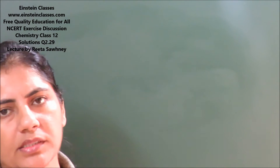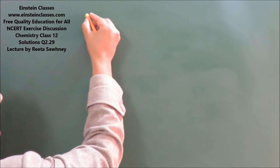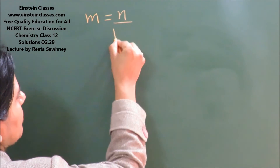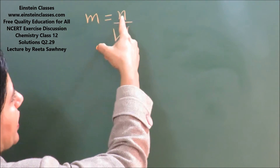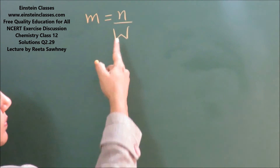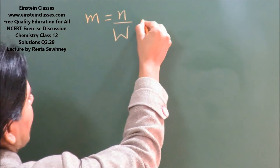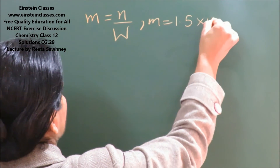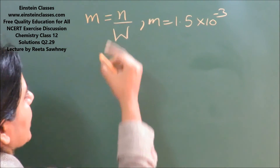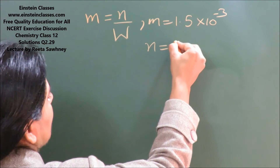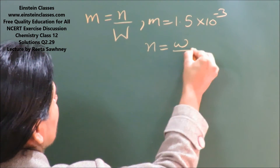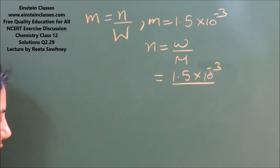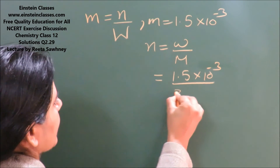From molality, we can find out the mass of solvent. The formula for molality is moles of solute divided by the mass of the solvent in kg. We know the value of molality: 1.5×10⁻³. We can calculate the moles of solute as the given mass of the solute divided by the molar mass. The molar mass of Nalorphine comes out to be 311 g/mol.